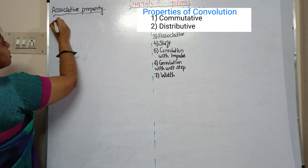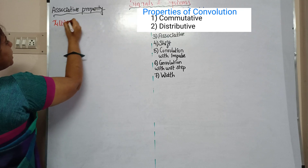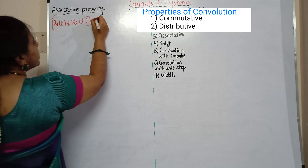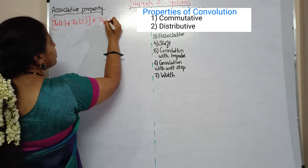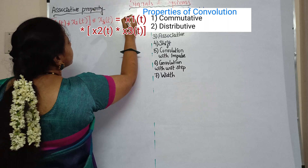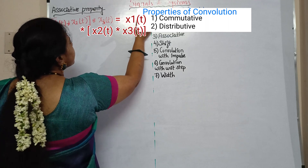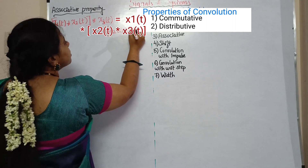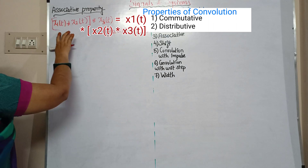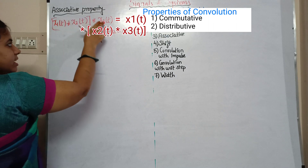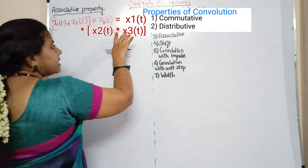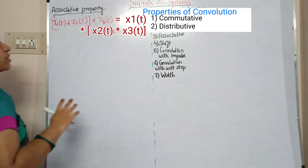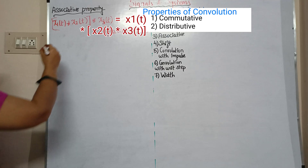Third associative property: x1(t) convolution x2(t) convolution x3(t) equals x1(t) convolution x2(t) convolution x3(t). That's why the first signal is convoluted by the answer and the third signal is convoluted by the answer, and the second signal is convoluted by the answer and the third signal is convoluted by the answer — they are equal. So let's see the proof.